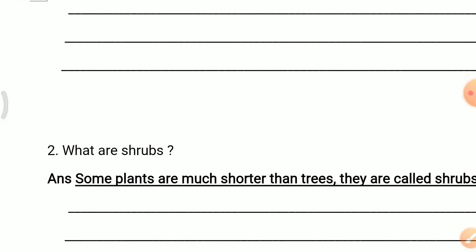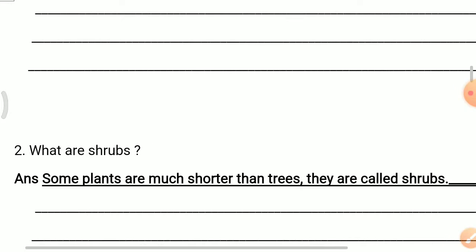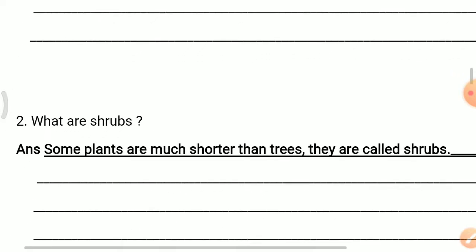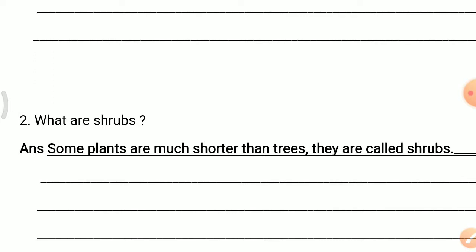Question 2: What are shrubs? Answer: Some plants are much shorter than trees. They are called shrubs. Plants that are a little shorter than trees are called shrubs.